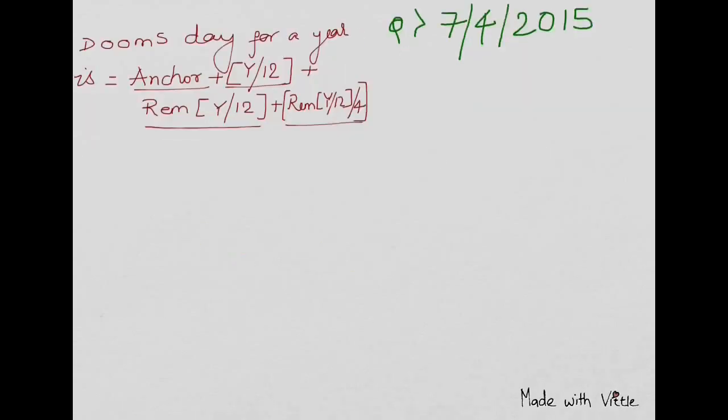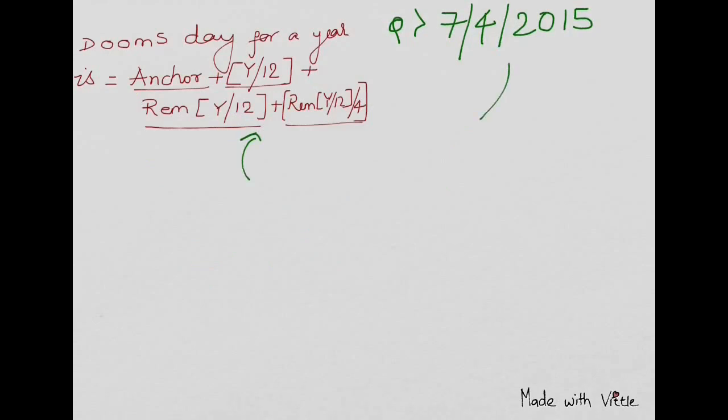This was our formula. The anchor for the year 2015 is Tuesday, plus y (the last two digits, which is 15) divided by 12 - just take the whole number, which is 1. The remainder is 3, as 15/12 remainder is 3. Then remainder by 4: 3/4 is zero.